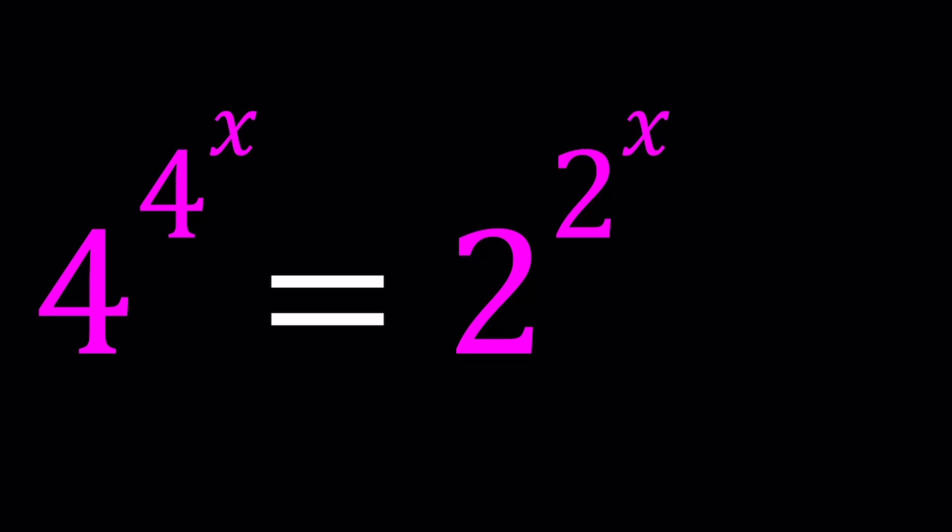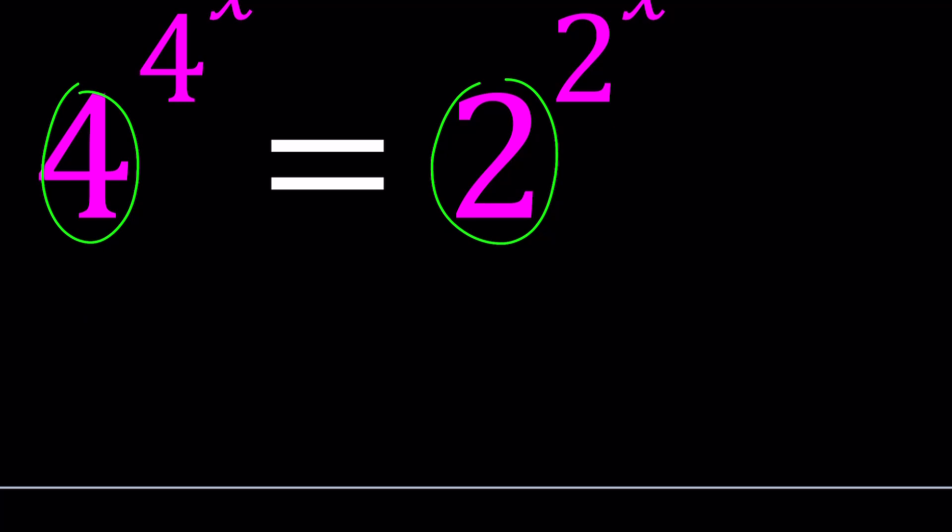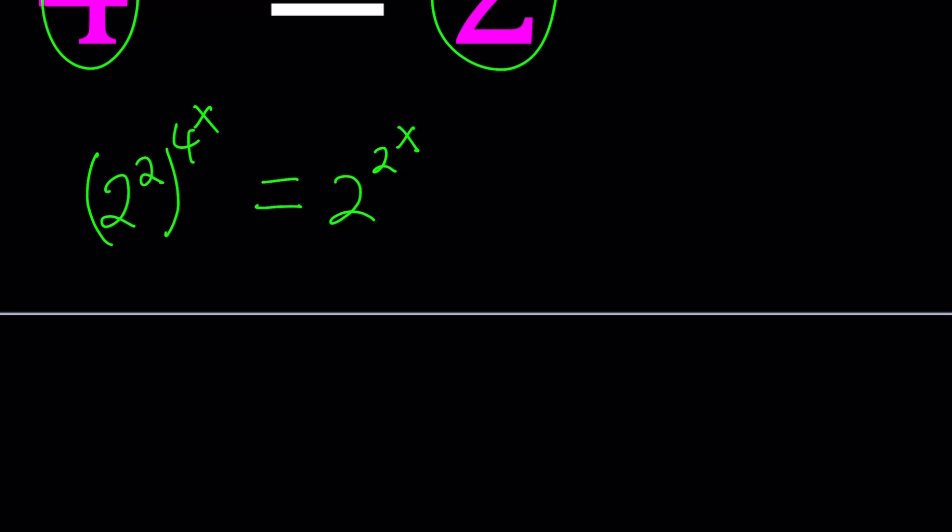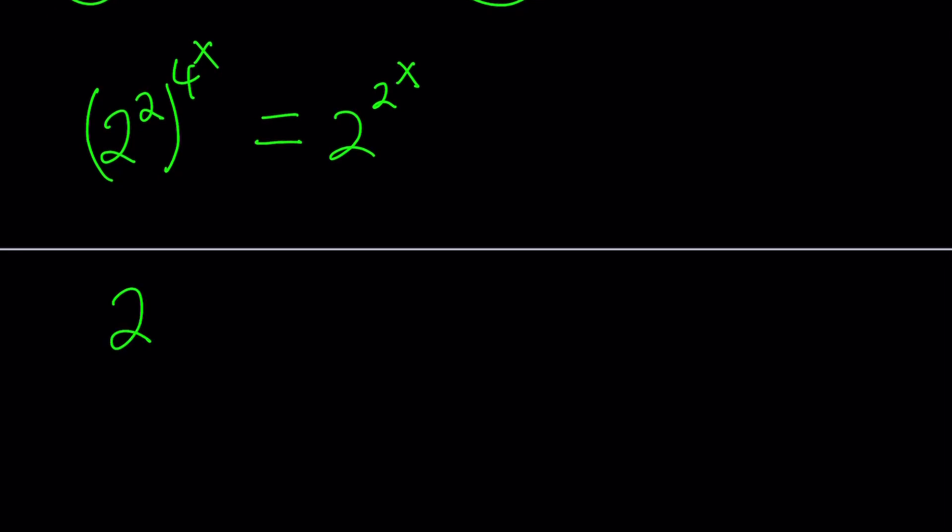Alright, so one thing that makes this problem easier is that the bases are kind of related. 4 and 2. So I can go ahead and write the 4 as 2 to the second power, and then raise it to the 4 to the x. Now I have the same base, so let's multiply these exponents. This becomes 2 to the power 2 times 4 to the x equals 2 to the power 2 to the x.